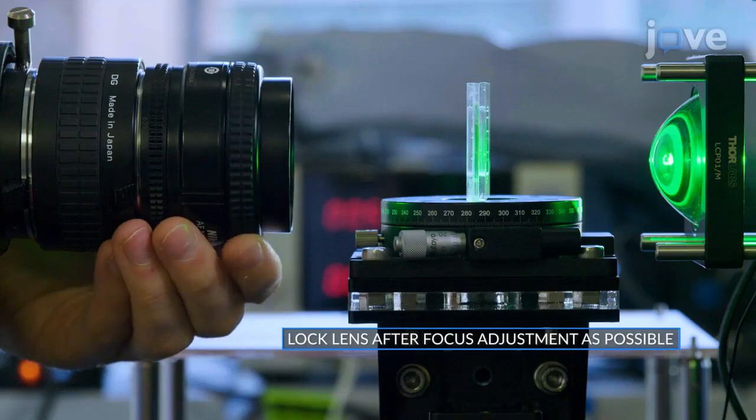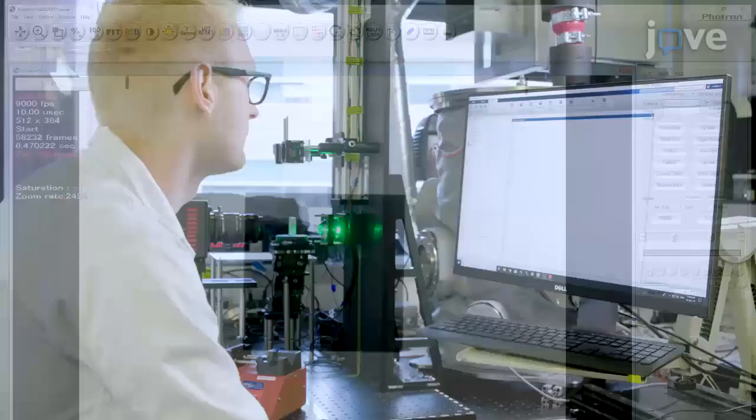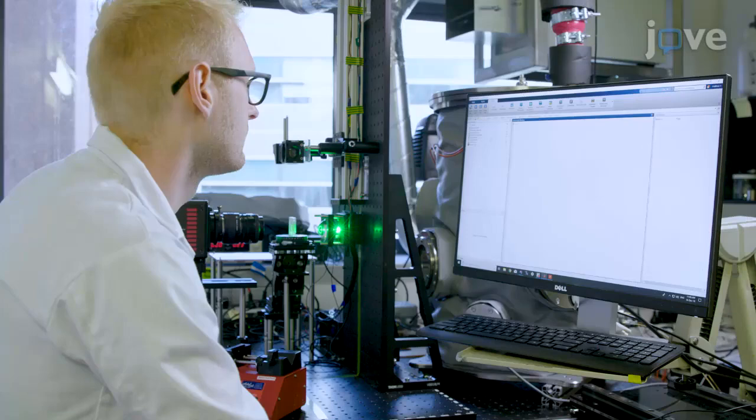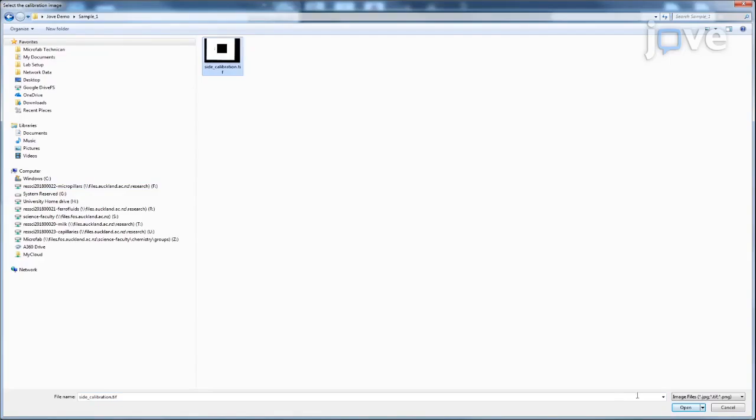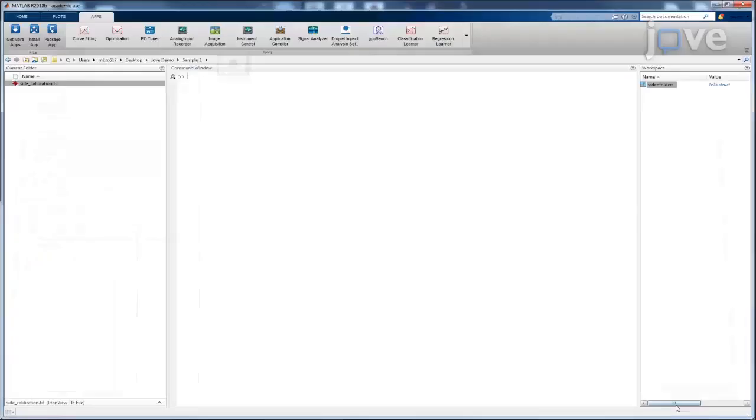When the marker is in focus, capture an image. Load the graphical user interface for the Droplet Impact Analysis software in MATLAB. Click Calibrate Camera and select the captured image to run the image analysis code. Enter the size of the calibration square in millimeters and click OK.